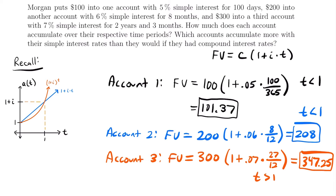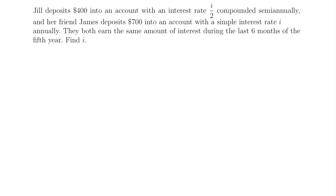Because of the behavior of these accumulation functions, we can determine which type of interest rate earns more depending on the amount of time that an account is active. For our next example, Jill deposits $400 into an account with an interest rate of i divided by 2 compounded semi-annually, and her friend James deposits $700 into an account with a simple interest rate i annually. They both earn the same amount of interest during the last six months of the fifth year. Find the value of i.